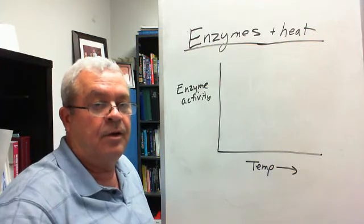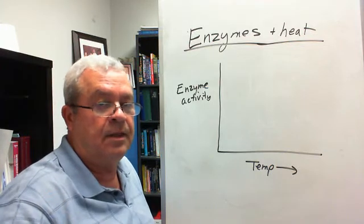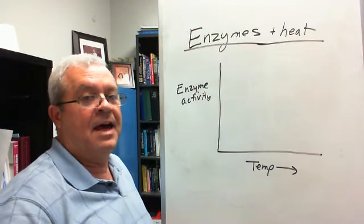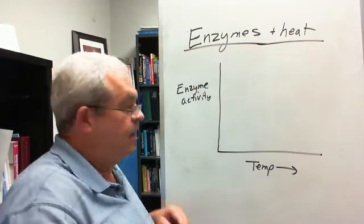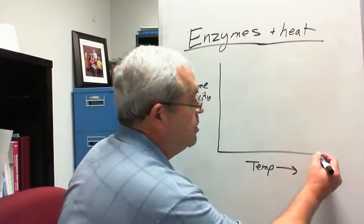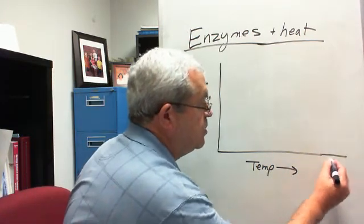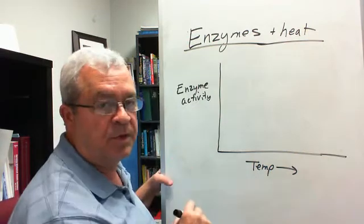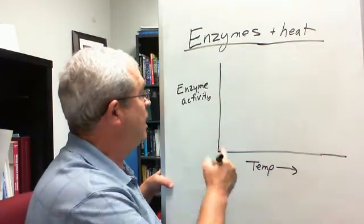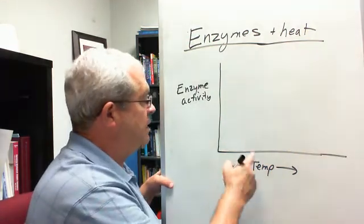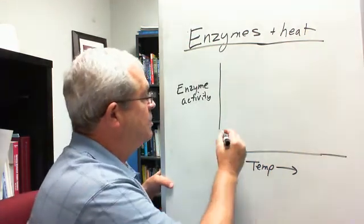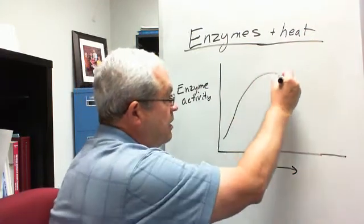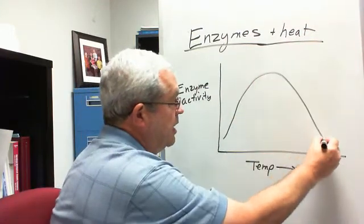Earlier in this lesson we said there's how many enzymes out in enzyme land? Thousands. There are thousands. But even though there are thousands of enzymes, 100% of those enzymes have a graph of enzyme activity against temperature that looks something like this.